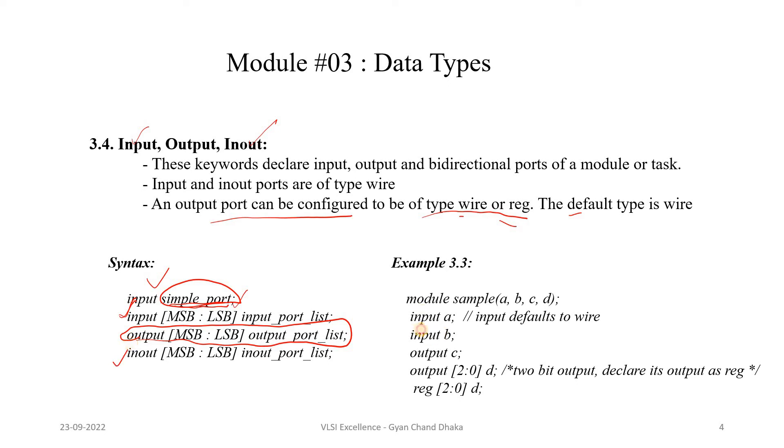Here is an example input, we have A and B port which will be of wire type, and then we have the output C and D. D is a vector. This is going to be either wire or reg data type.